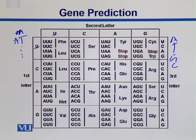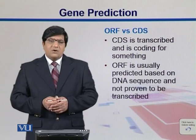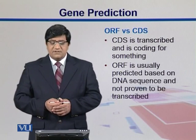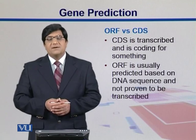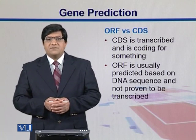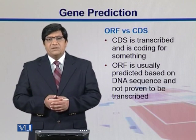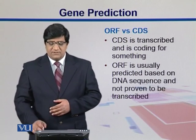Obviously not all 64 codons are coding — there are stop codons and a start codon AUG (ATG in DNA). There are three stop codons, and there may be more than one codon for some amino acids — this is called the degeneracy of the codon. CDS is transcribed and codes for something, whereas ORF is obtained through predictions, so not all ORFs may be coding. You get an open reading frame by designing an algorithm that looks for ATG, an in-between sequence, and a stop codon.